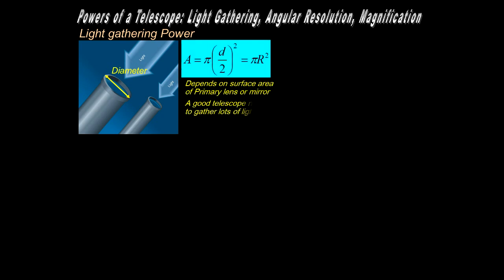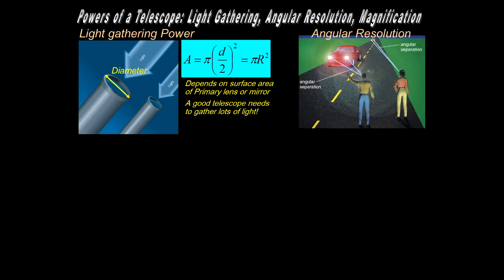So what constitutes a powerful telescope? The powers are light gathering, angular resolution, and magnification. Notice I put magnification at the end of the list. The main thing is light gathering because it's got multiple positive effects. Larger diameter, the area of a circle is pi r squared, depends on the surface area of the main lens or mirror. A good telescope needs to have a large diameter so it can gather lots of light.